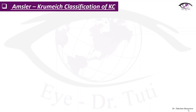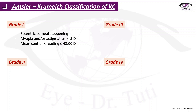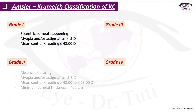The Amsler-Krumeich classification of keratoconus is probably the most clinically used classification. It includes four grades. Grade 1 is characterized with eccentric corneal steepening, myopia with or without astigmatism less than 5 diopters, and K readings less than or equal to 48 diopters. Grade 2 is again absence of scarring, myopia with or without astigmatism between 5 and 8 diopters, K readings between 48 and 53 diopters, and minimum corneal thickness of 400 microns.